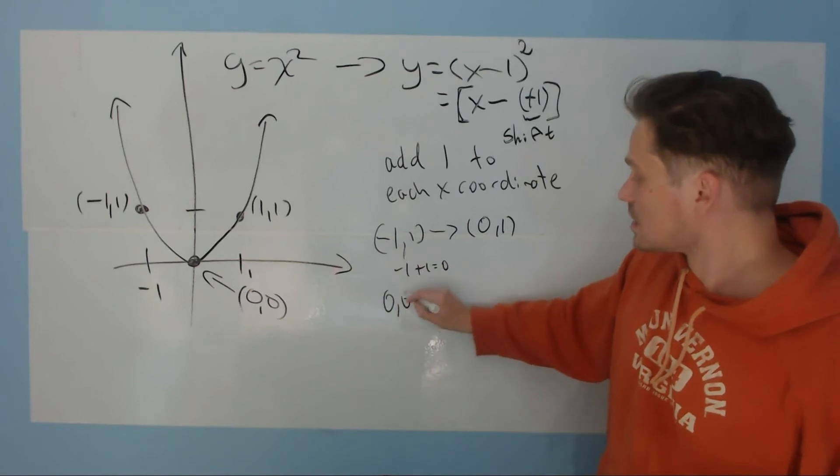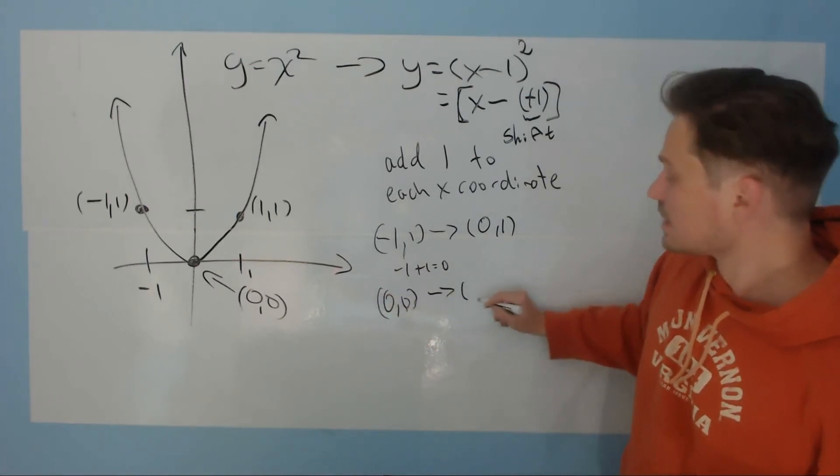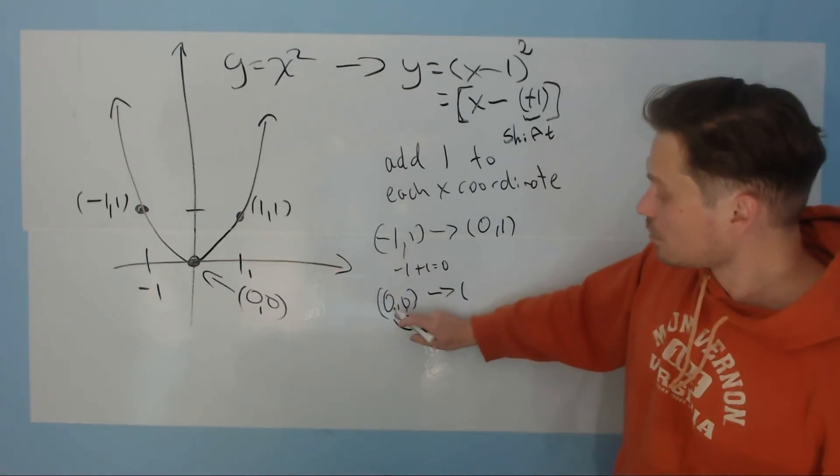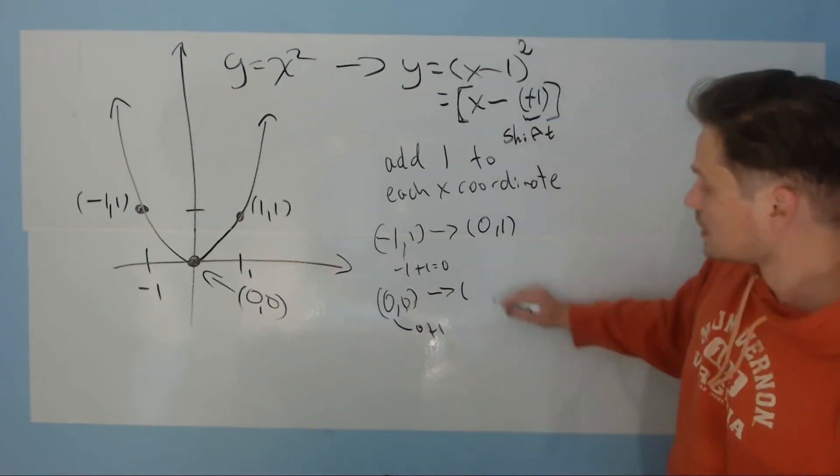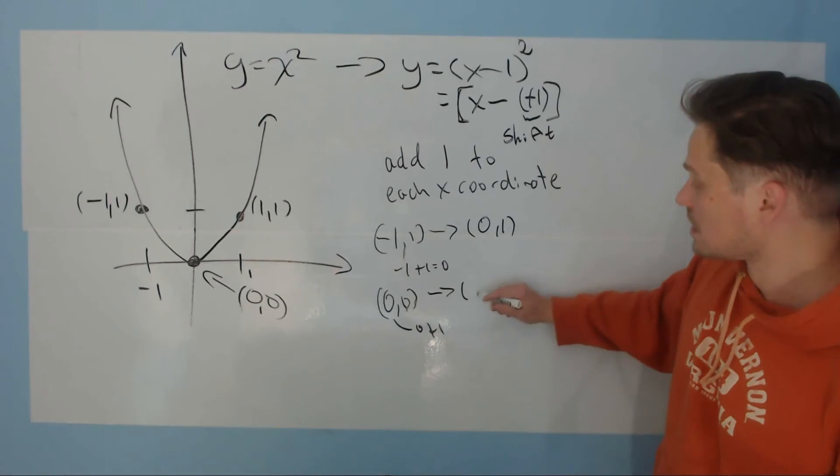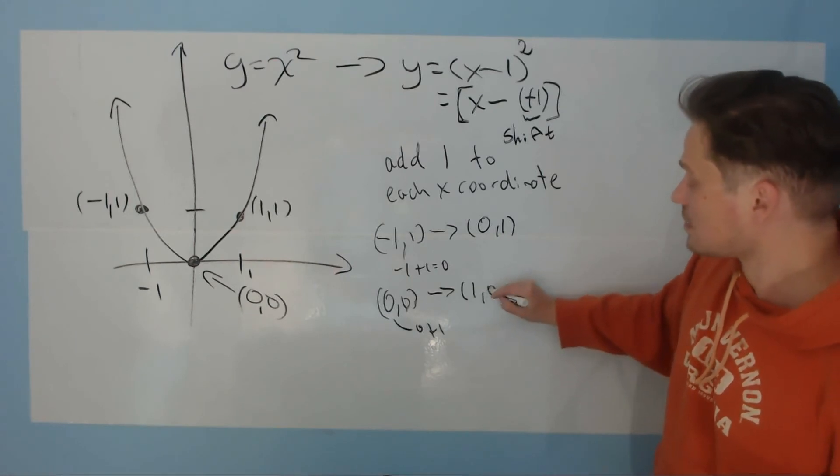You take your next point, 0, 0, and you transform that so it looks like this. You're going to add 1 to the x-coordinate. So 0 plus 1 is what you're doing there. When you carry that out, it's going to give you 0 plus 1. It's going to be 1, 0 as the new point.